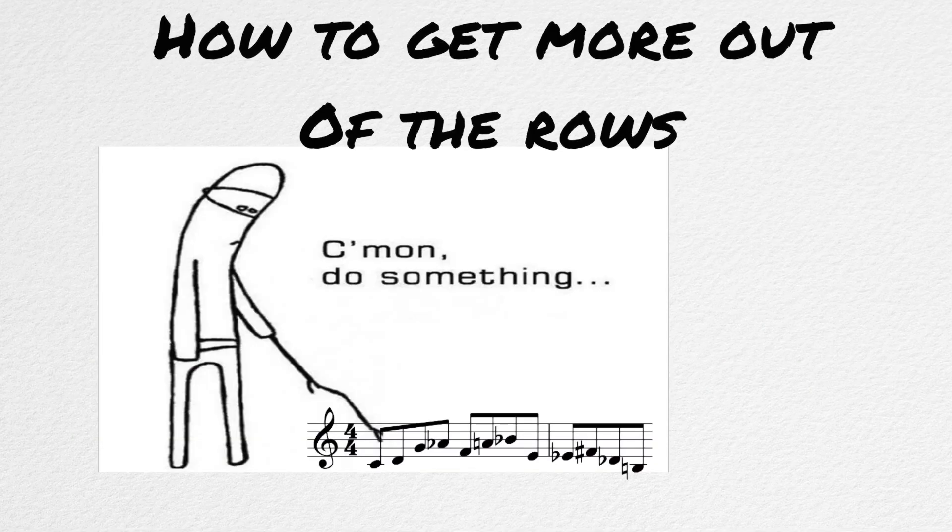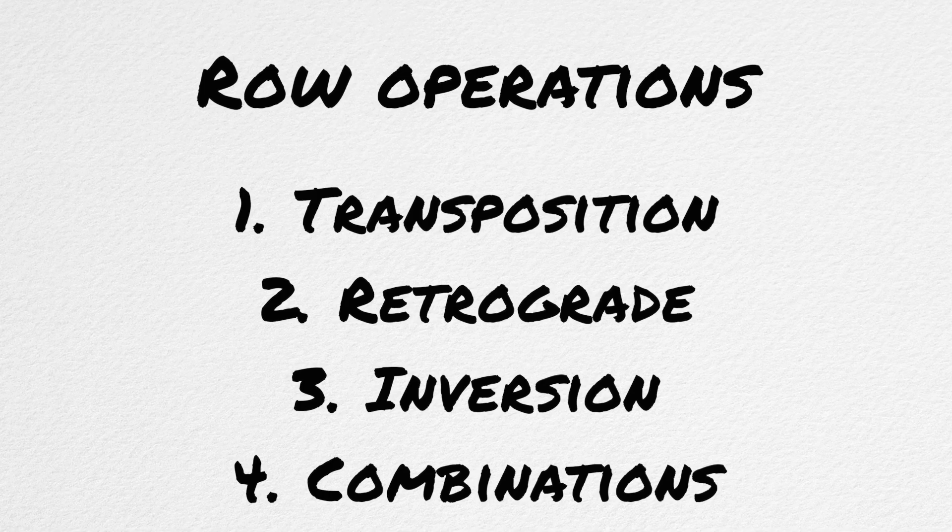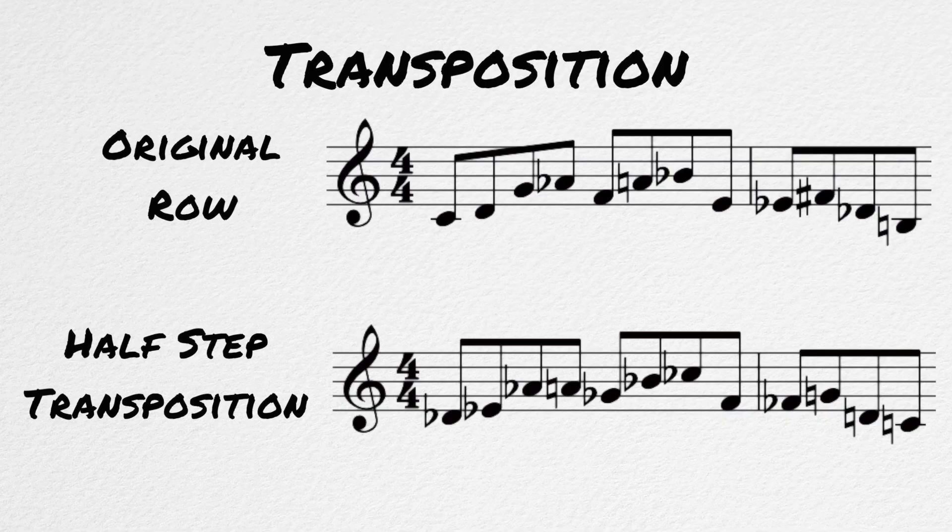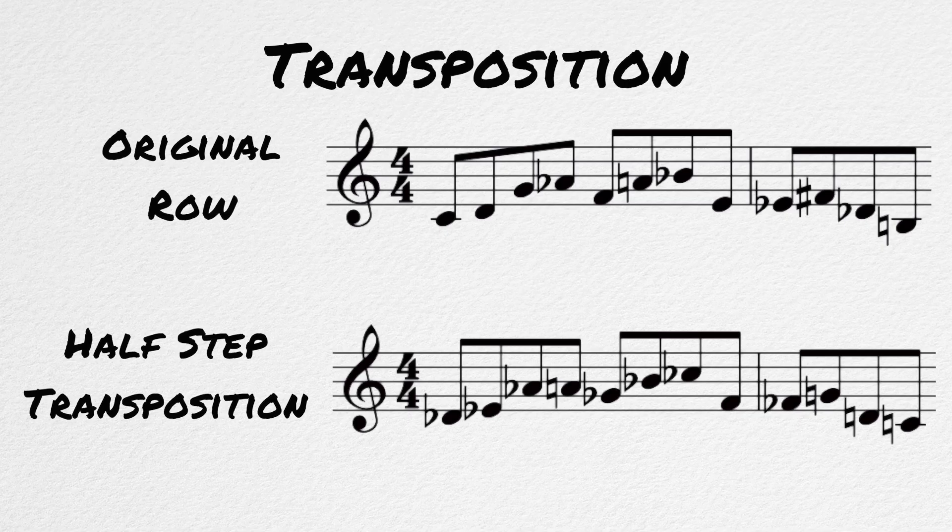What happens when you want to use notes in different orders? It would get boring pretty quick if you just had to use that one row in that order over and over again. Well, there are operations that you can put the row through to help create some more variety. The first operation is known as transposition. We can transpose the row to a new pitch level, so all of the notes will change, but the intervals between the notes will stay the same.